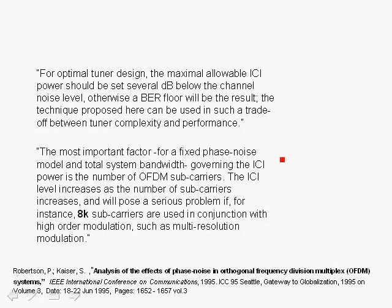Here we have a couple of paragraphs from the paper by Robertson and Kaiser. The key statement is that the phase noise due to intercarrier interference should be set several dB below the channel noise level, otherwise your bit error rate curve is going to floor. This means that because of the phase noise ICI, even though you increase the signal-to-noise ratio — by increasing transmitter power, for example — you still do not get the desired performance because you have a BER floor, and the floor is due to the fact that even at high SNR, the contribution of the phase noise ICI remains large.